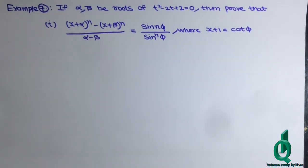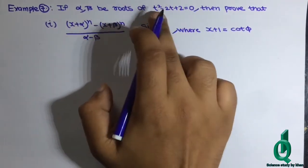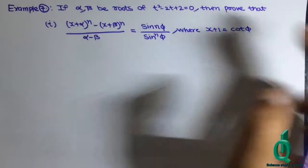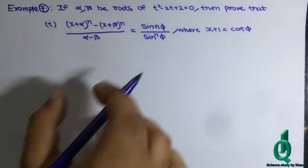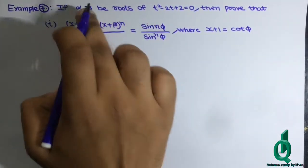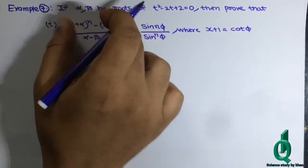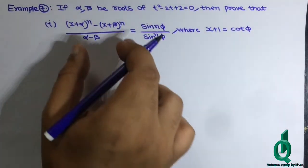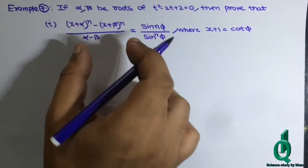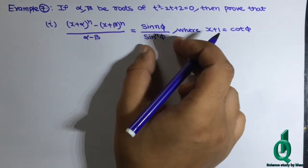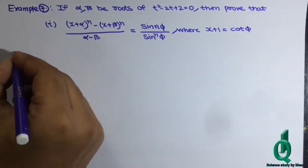हम इसको solve करते हैं। Alpha, beta इस equation के roots हैं। हमें यह condition prove करनी है। पहले हम alpha और beta find करेंगे, फिर left hand side pick करेंगे, alpha beta की values वहाँ put करेंगे और देखेंगे कि proof बनता है।